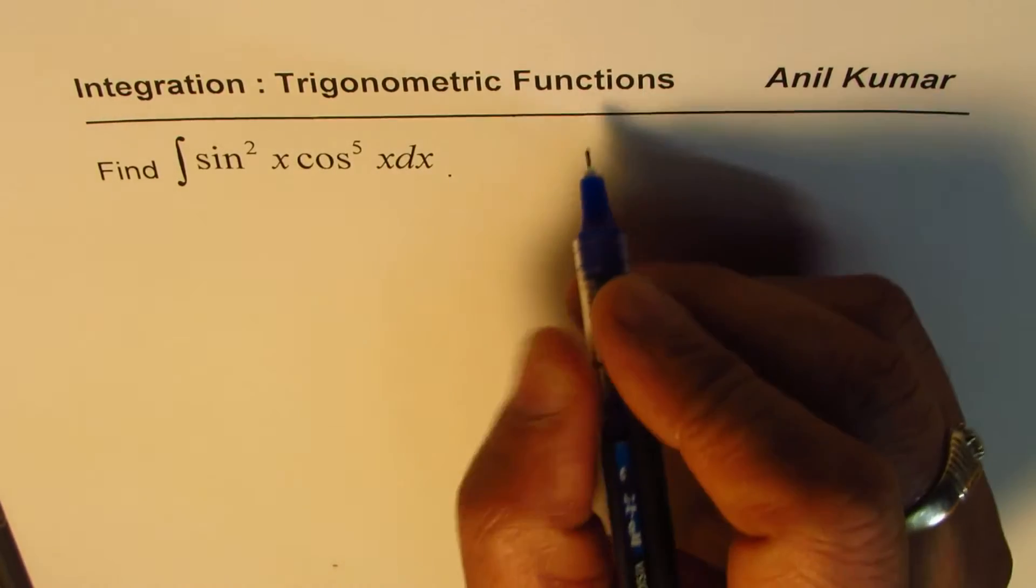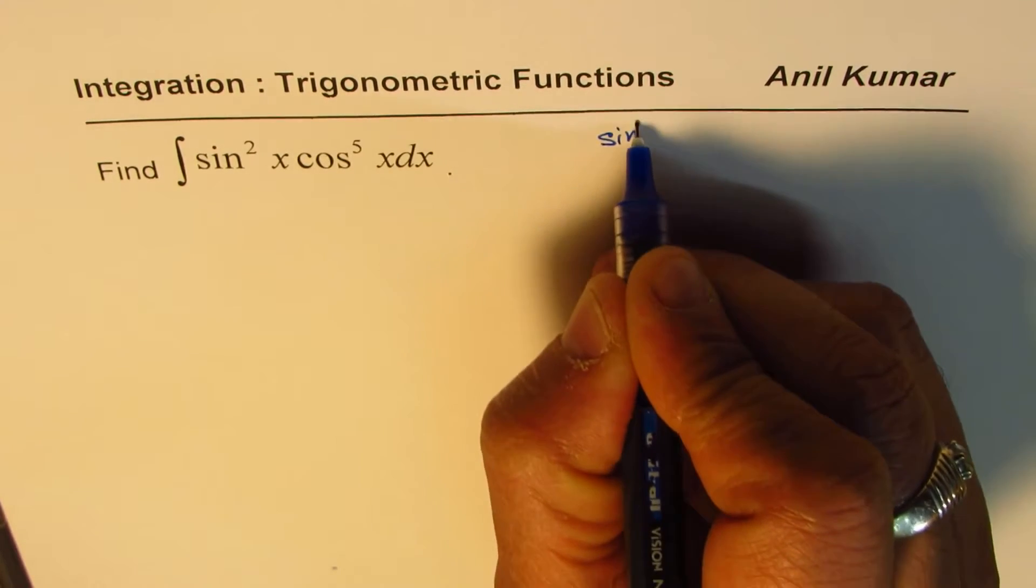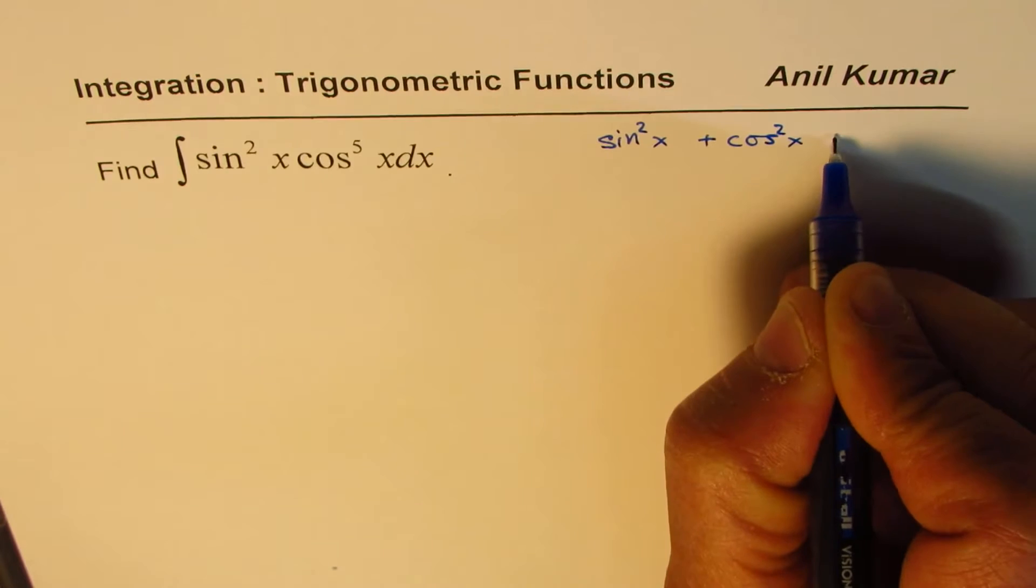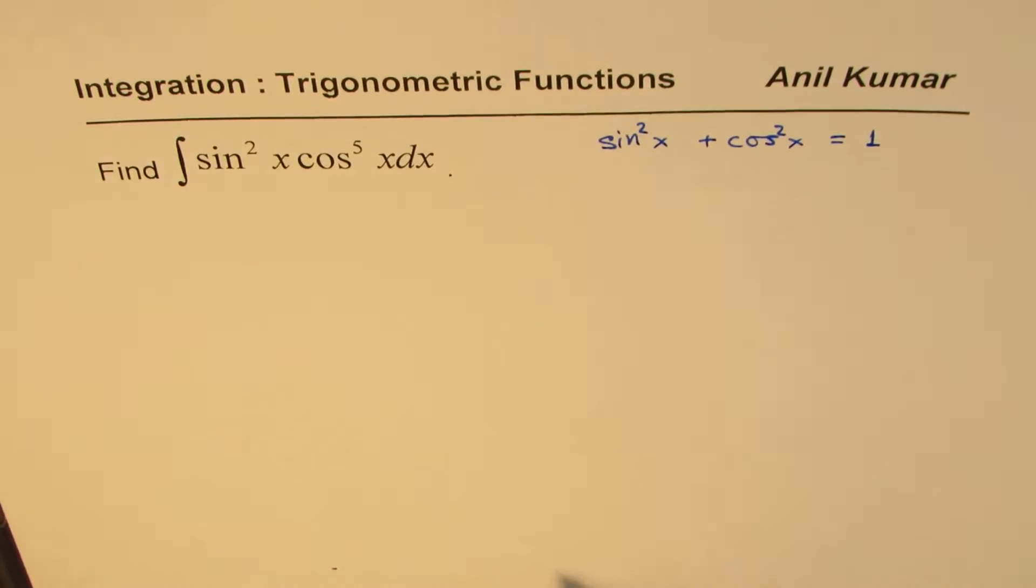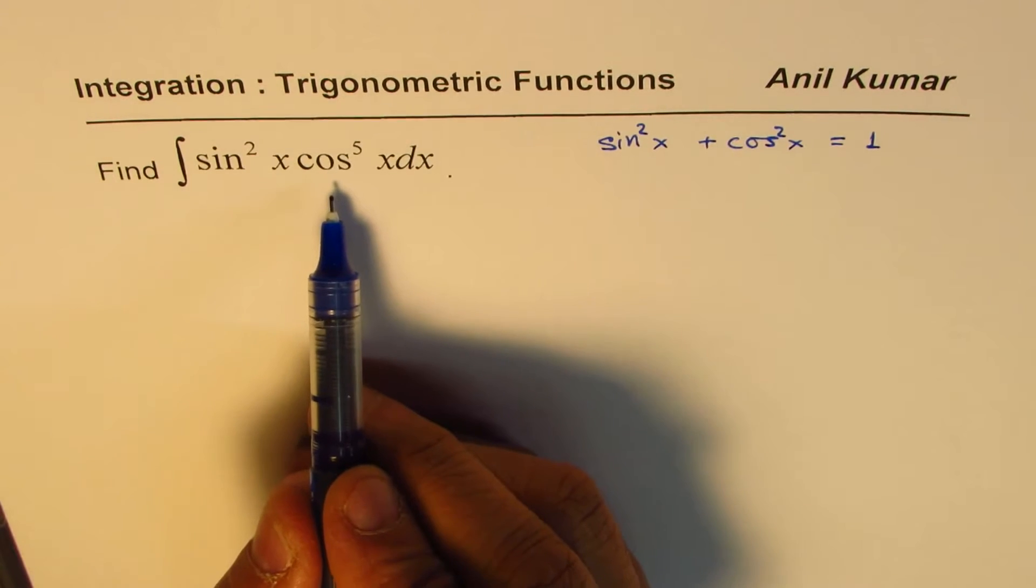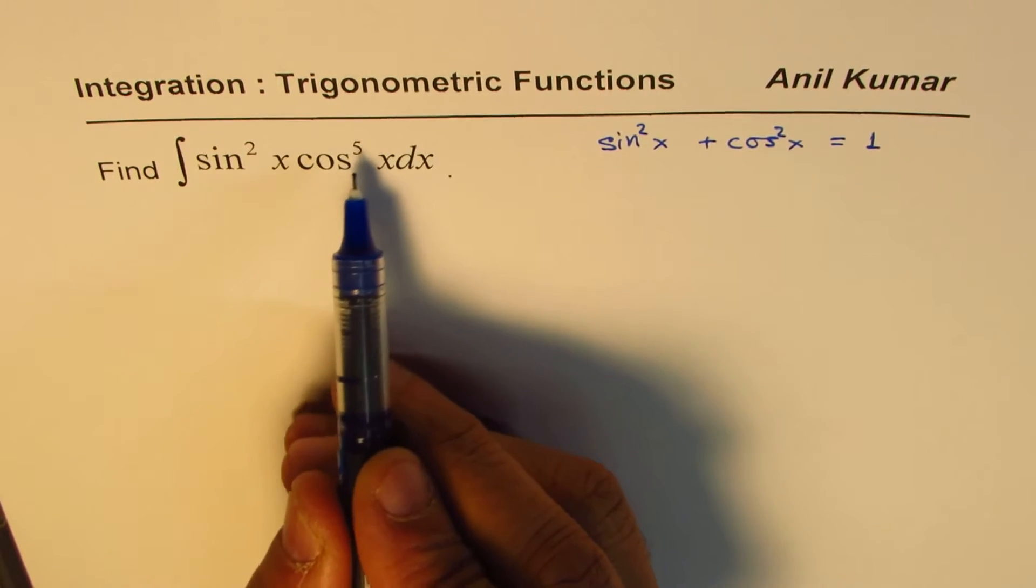The relation between sine and cosine is sine square x plus cos square x is equal to 1. That's the relation between them. And both are squares, so that means we have to see which is odd one. So odd one out is cos x.